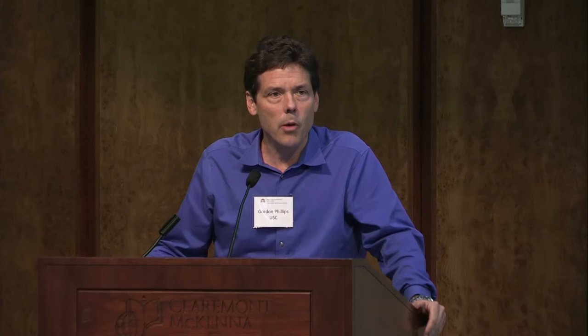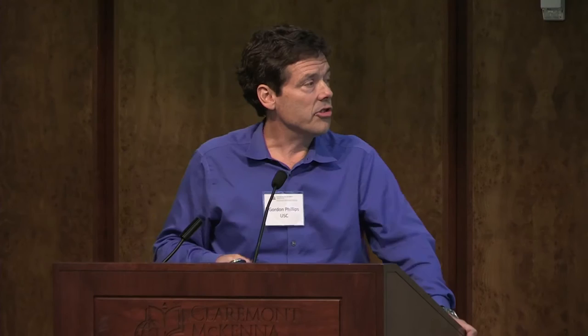When we go over to the finance department, a lot of times they say: how do we price securities, what is the pricing of risk, what are agency problems between managers and shareholders when you have to hire a separate agent? And there's also a problem of asymmetric information where investors have to extract fundamental information from firms. In most cases, they ignore market coordination problems or industrial organization. The central point I'll be making is that cash flows — which are the focus of the above central problems, because we still run discounted cash flow models — are fundamentally affected by product market competition and industrial organization. In many cases, we cannot ignore the market structure of an industry.